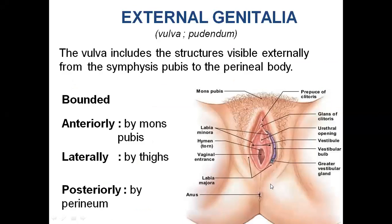The female external genitalia, which is also called as vulva or pudendum, includes the structures which are visible externally from the symphysis pubis to the perineal body.